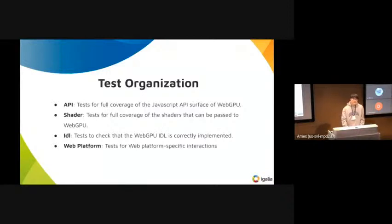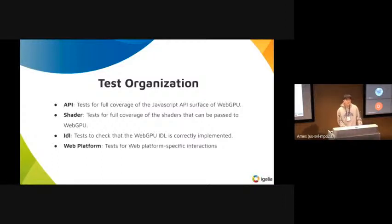The CTS is largely composed of four categories. API tests for full coverage of the JavaScript API surface of WebGPU. Shader tests for full coverage of the shaders that can be passed to WebGPU. IDL checks that the GPU interface is correctly implemented. Lastly, Web Platform Tests covers web platform specific interactions.